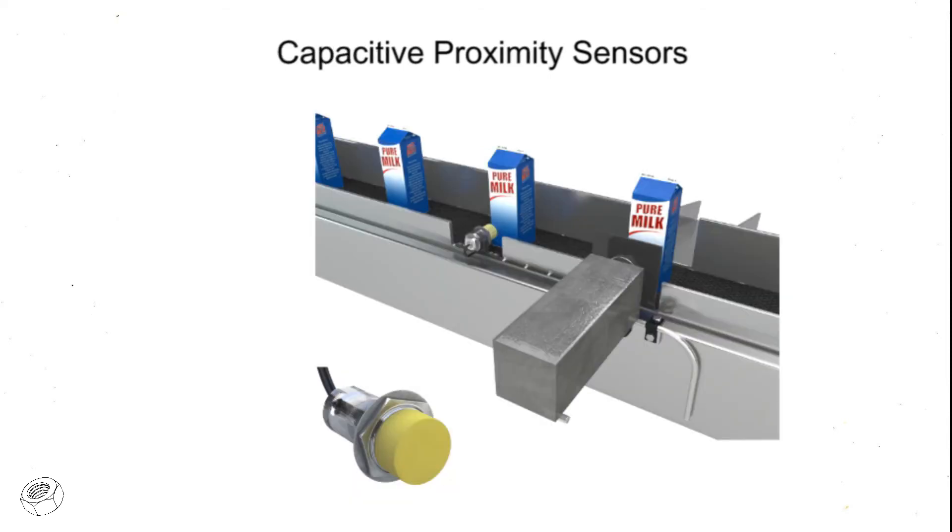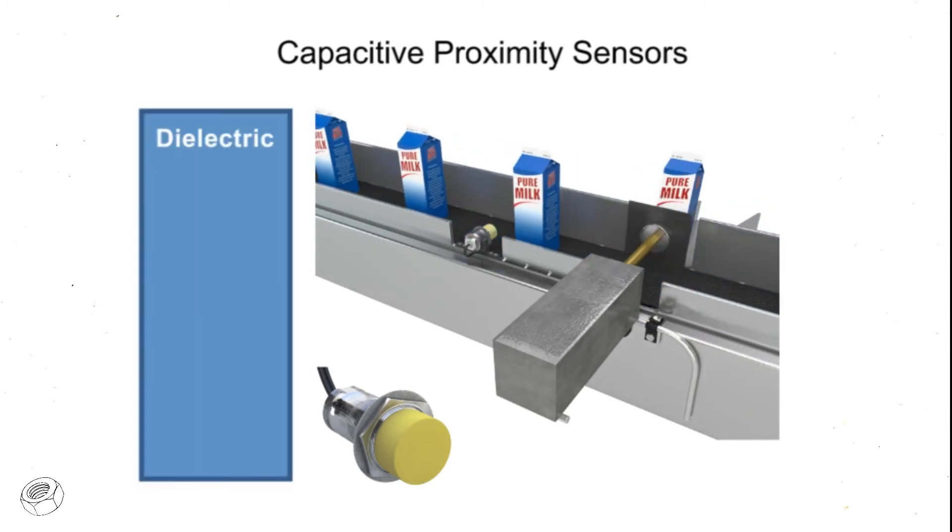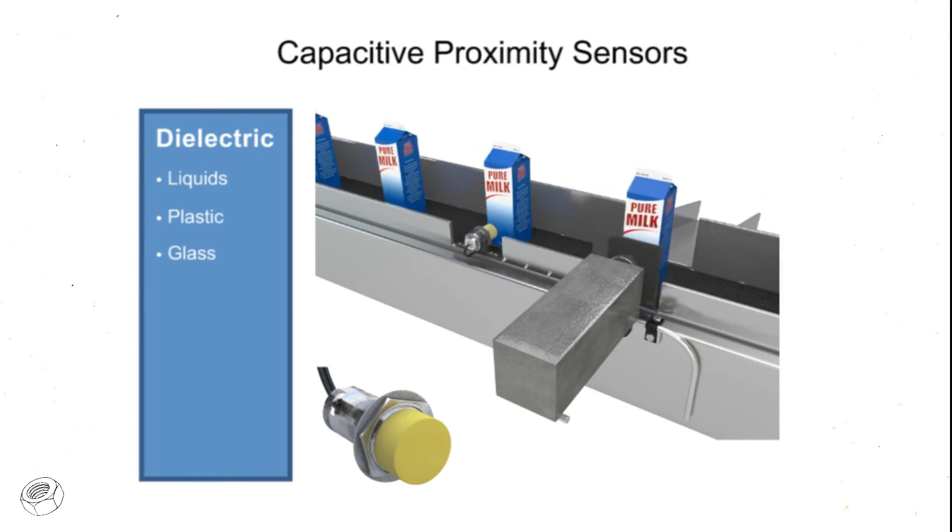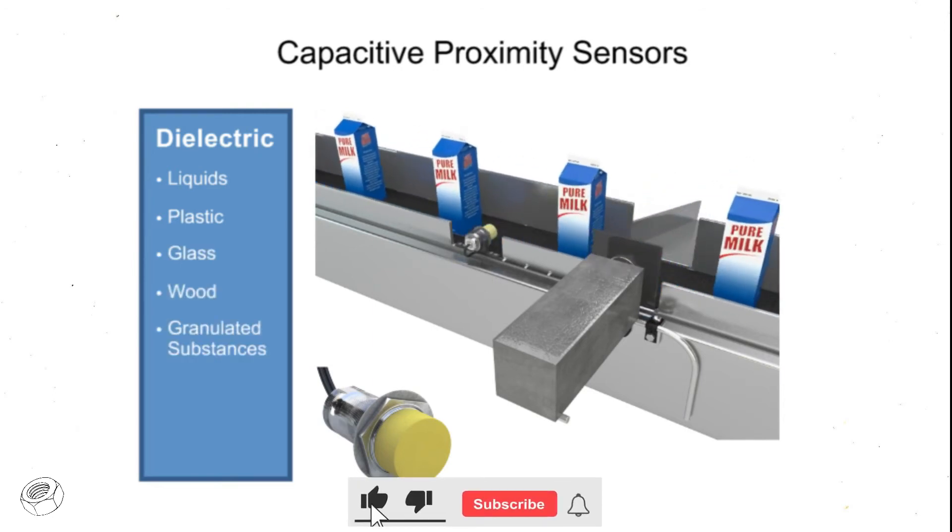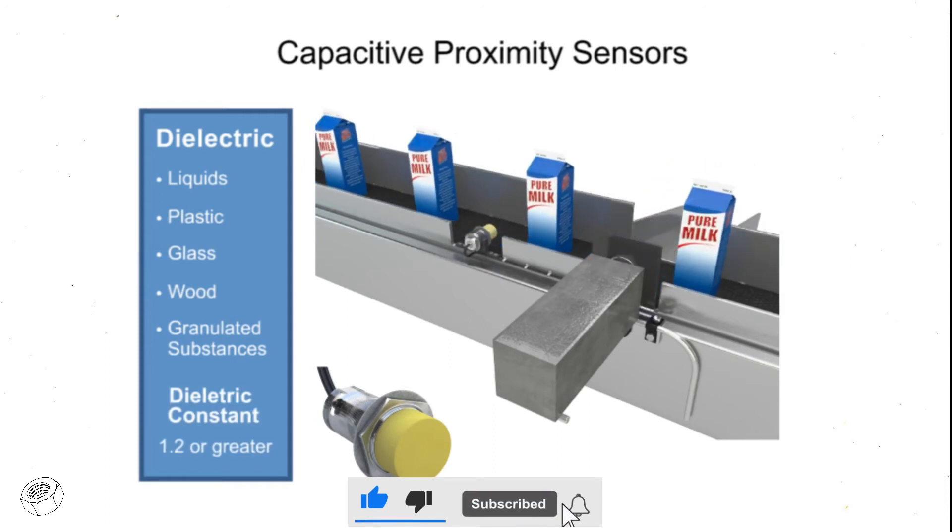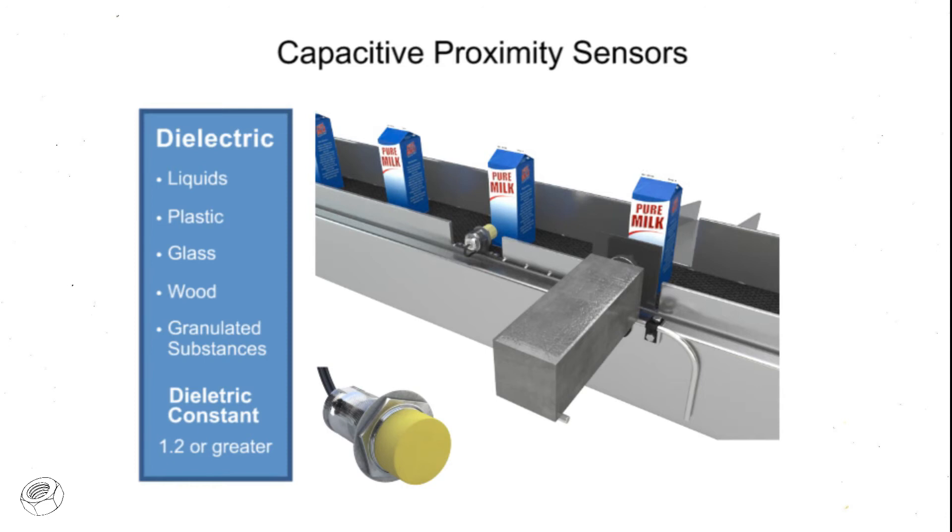Capacitive proximity sensors, on the other hand, can detect dielectric materials such as liquids, plastic, glass, wood, and granulated substances as long as it has a dielectric constant of 1.2 or more. Their range is from 3 millimeters to 15 millimeters depending on the dielectric material to be detected.